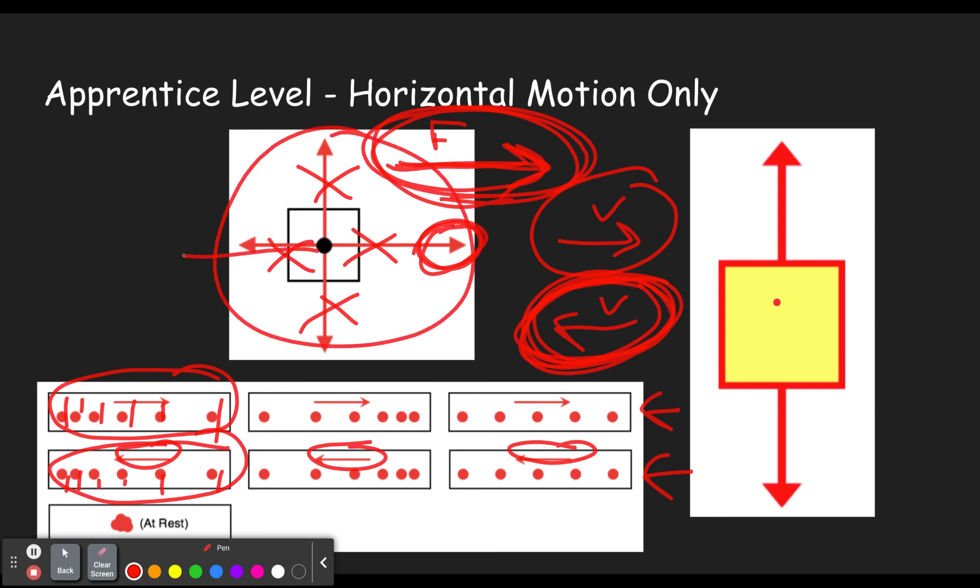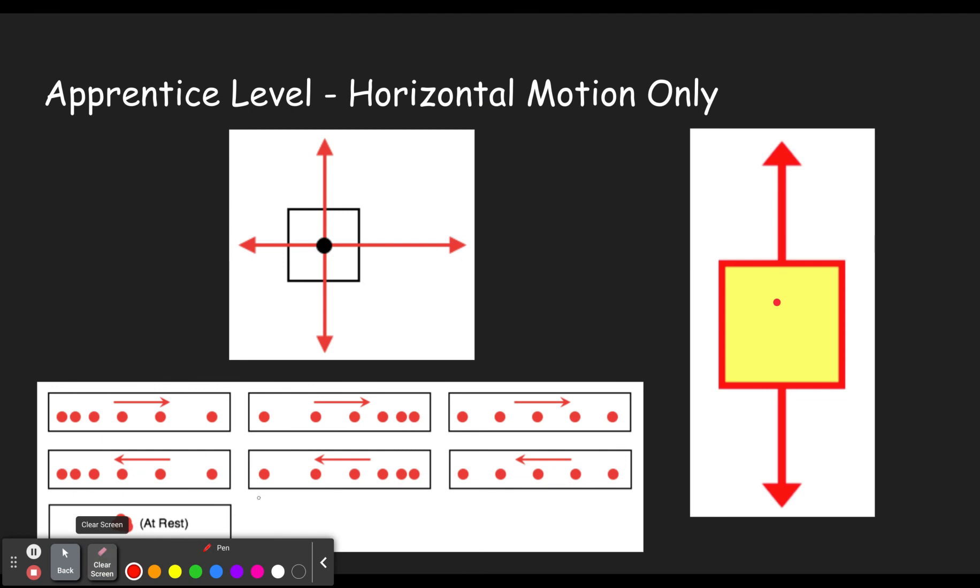Whereas if the force was going more to the right, that would cause this rightward moving one to slow down, sorry, going more to the left, then this rightward moving one would slow down and the leftward moving one would speed up. Let's move on to the next one.